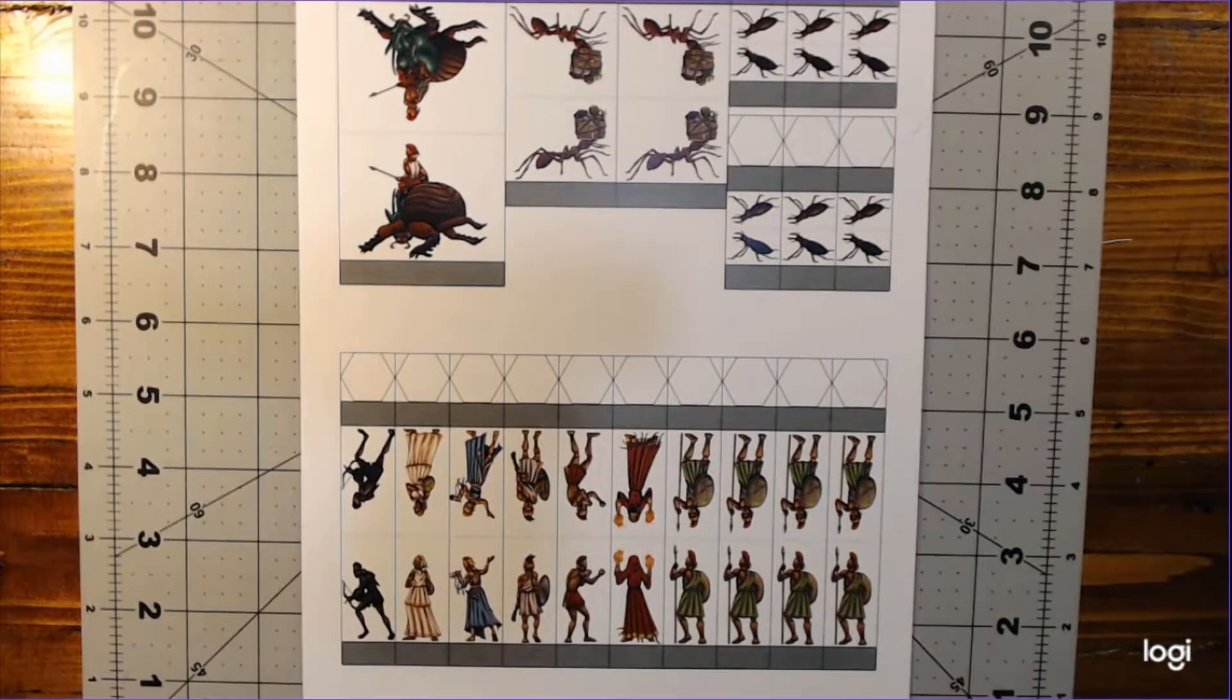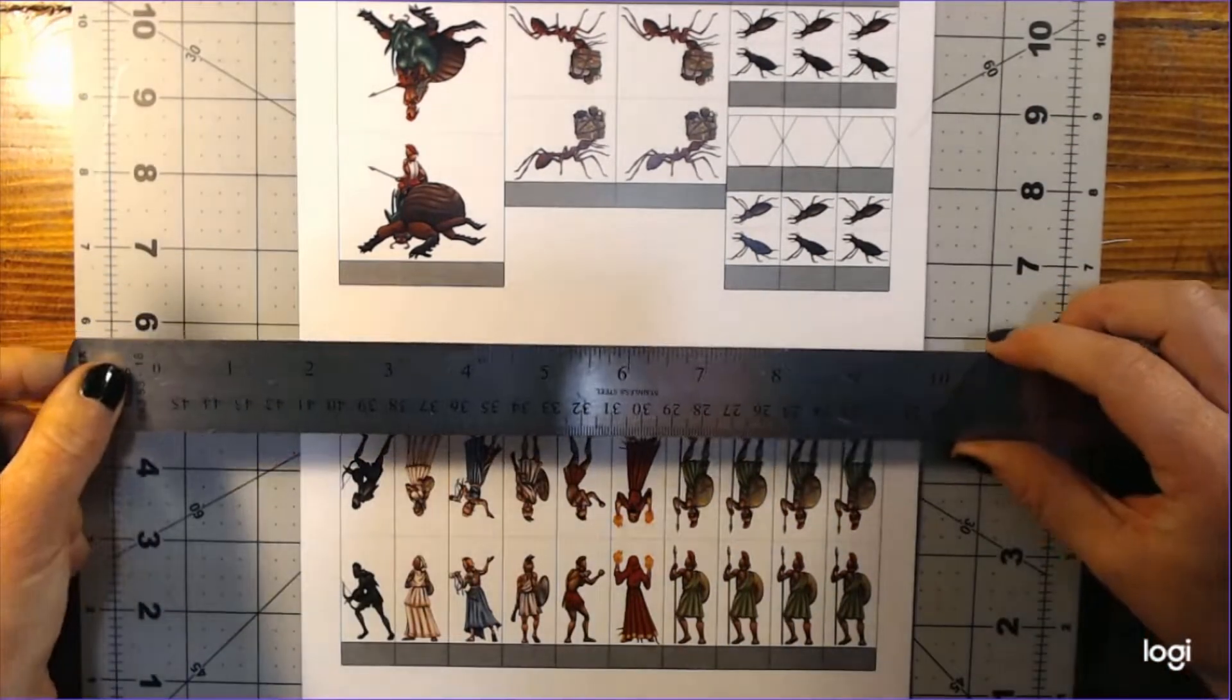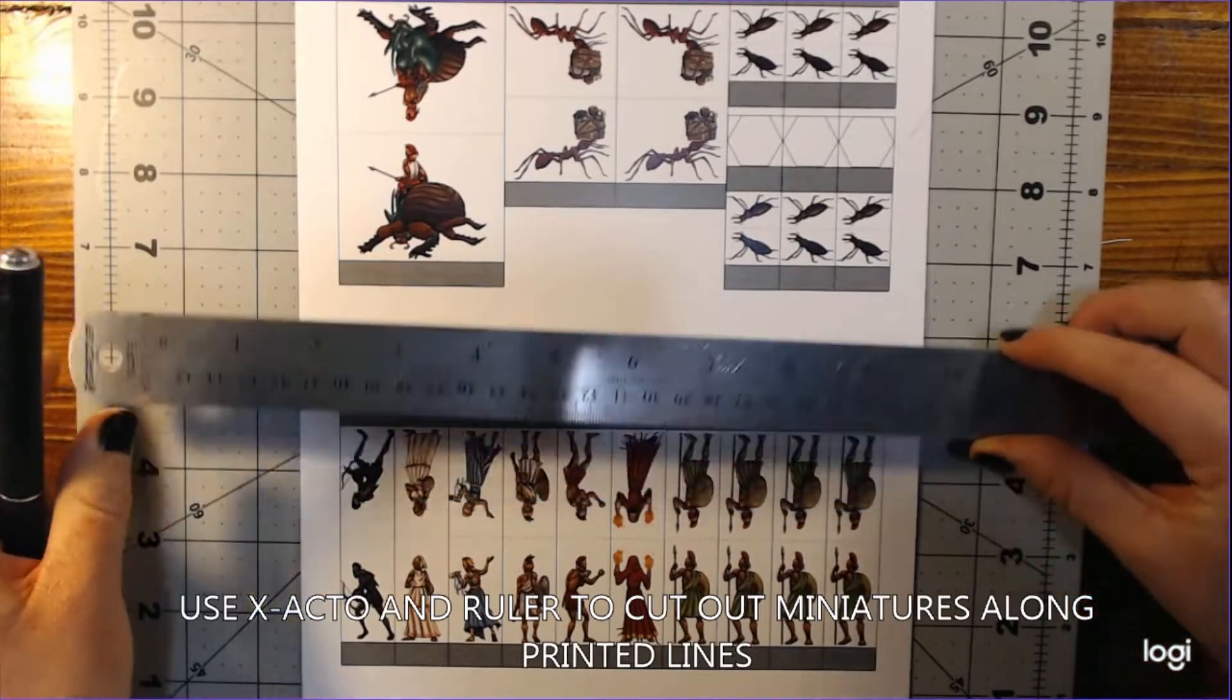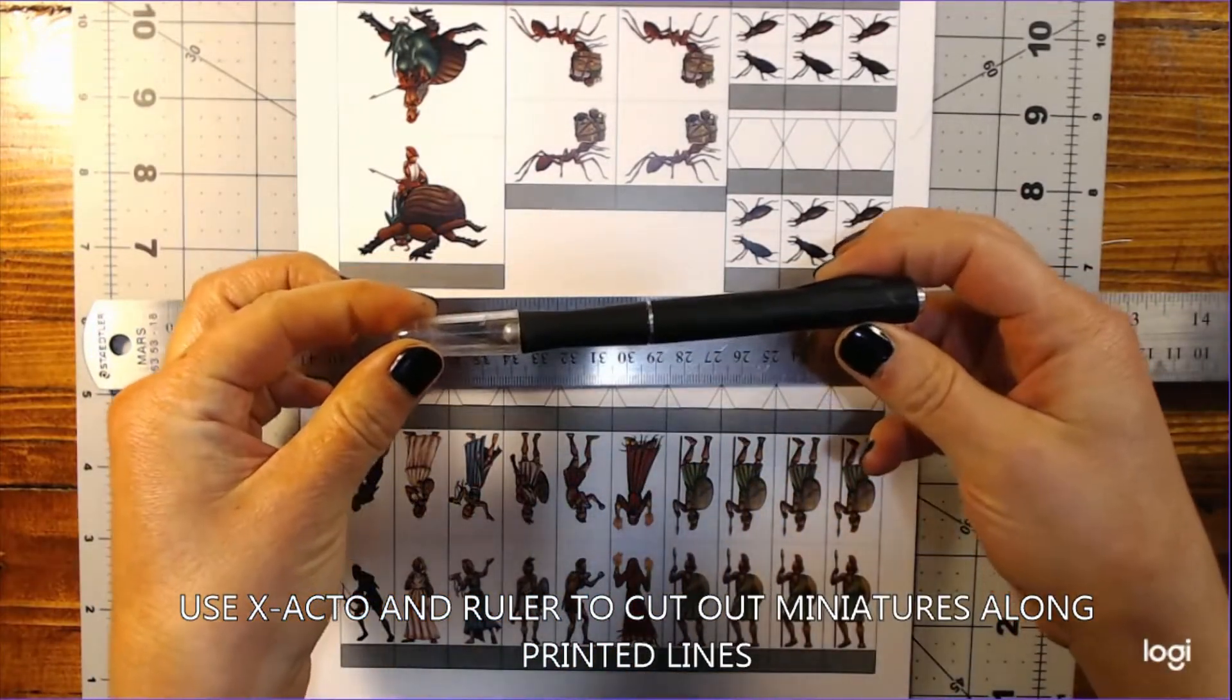Once you have printed the minis, you will need cutting tools. While you can use a basic pair of scissors, for nice straight cuts we recommend you use a metal ruler or other straight edge and an exacto knife.